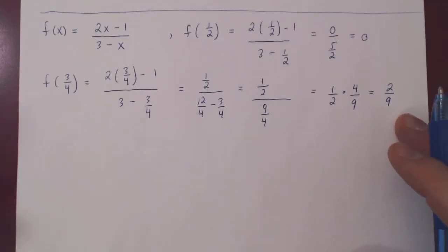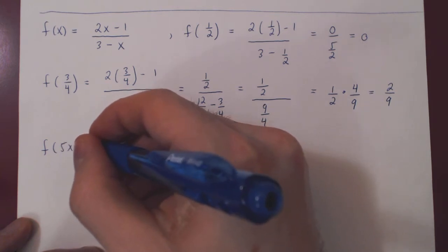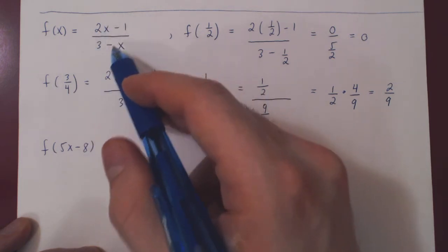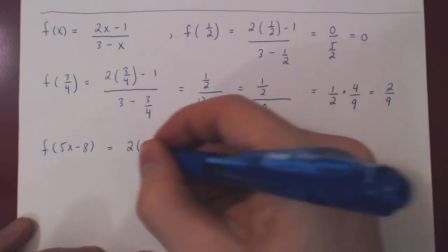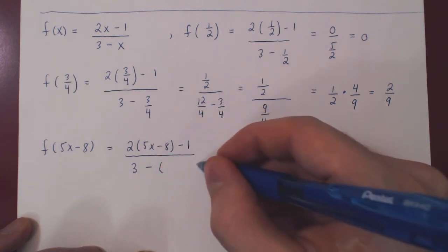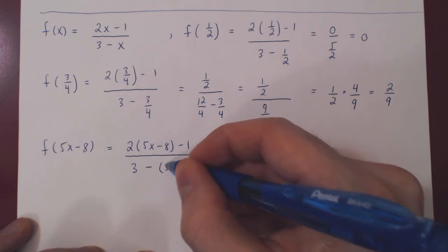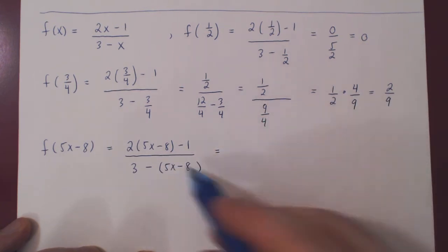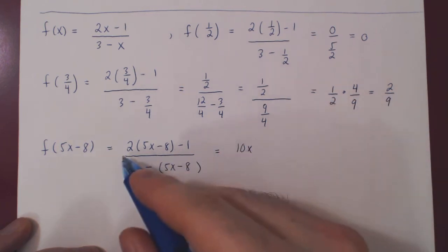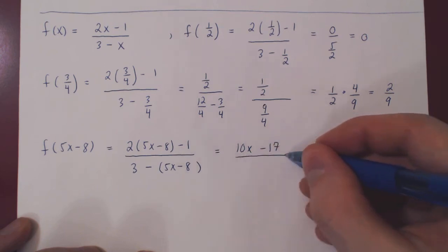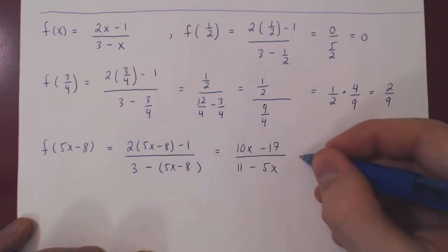Let's do two more substitutions. Let's look at f of 5x minus 8. Now replacing x everywhere in the expression by 5x minus 8. So we get 2 times 5x minus 8 minus 1 over 3 minus — be careful to open your parentheses, because all of x is being negated, so you have to negate all of the new variable, which is 5x minus 8. We can simplify: 2 times 5x is 10x, minus 16 minus 1 is minus 17, over negative 5x — but negative negative 8 is plus 8, plus 3 is 11 — so 11 minus 5x.